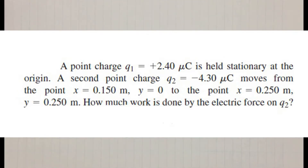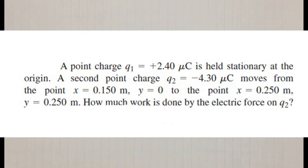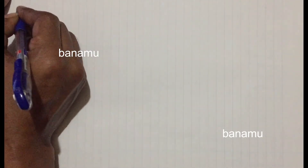A point charge q1 equal to 2.4 microcoulombs is held stationary at the origin. A second point charge q2 equal to minus 4.3 microcoulombs moves from the point x = 0.15 m, y = 0 to the point x = 0.25 m, y = 0.25 m. How much work is done by the electric force on q2?